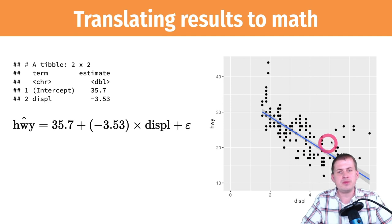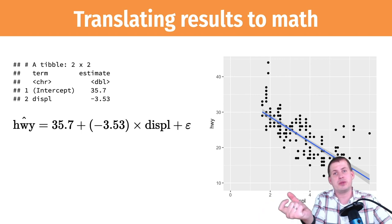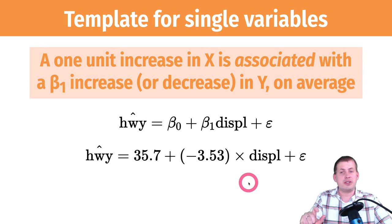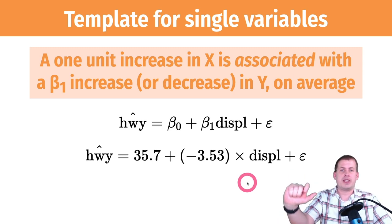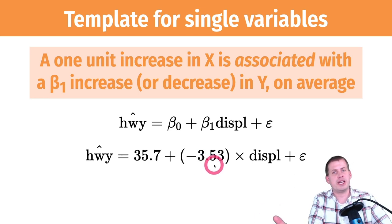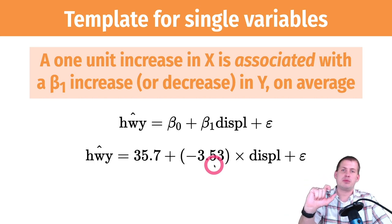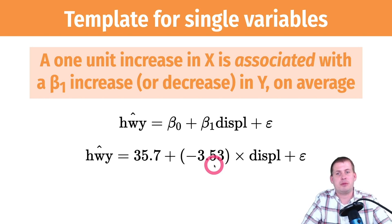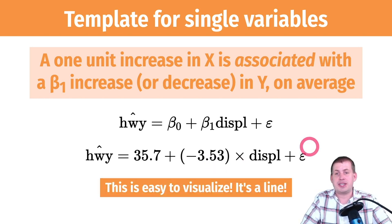The way we interpret this: you can use the slope to talk about the effect of displacement on miles per gallon using a sentence: 'A one unit increase in x is associated with a β1 increase or decrease in y, on average.' In this case: a one unit increase in displacement is associated with 3.5 fewer miles per gallon on average. So every time you increase displacement by one, your miles per gallon goes down by 3.5.